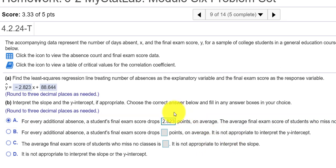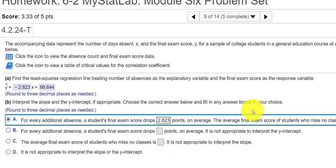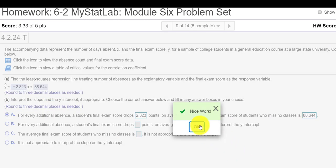And if you think about it, a student that had no absences or zero, if I put in a zero for x, zero absences, zero times negative 2.823 is still zero. So you'd be left with a score of 88.644. For every additional absence, the score is going to drop by this 2.823. That's the slope. The final exam score for someone who misses zero classes, I'd put in a zero for x. I'd be left with the 88.644. Check answer. Looks good.